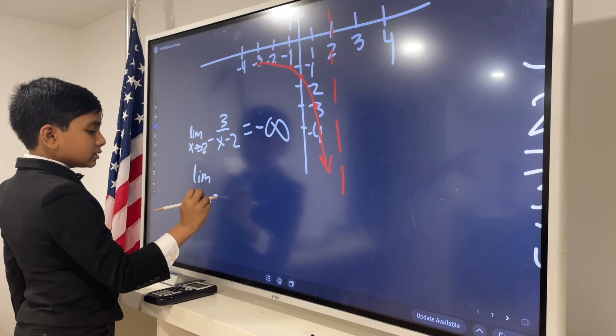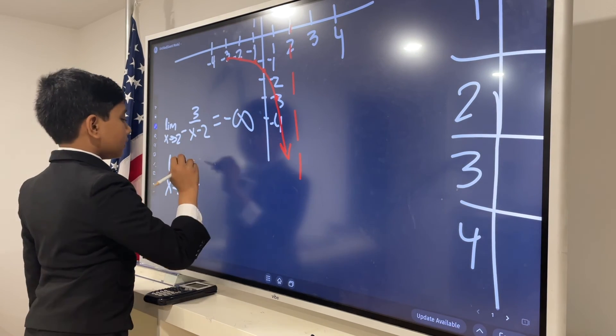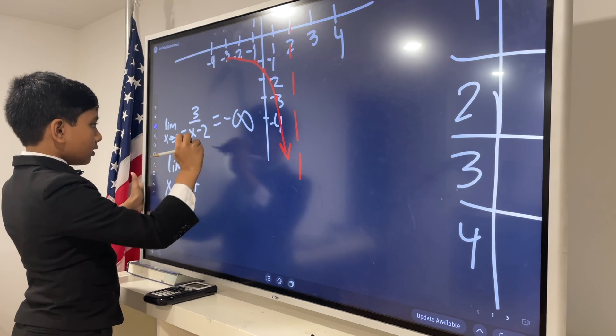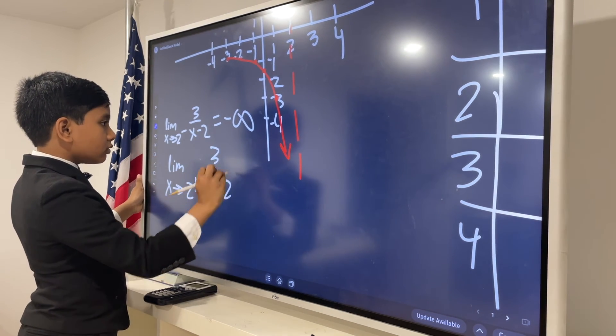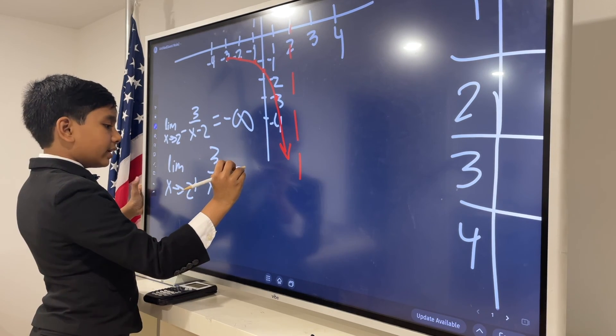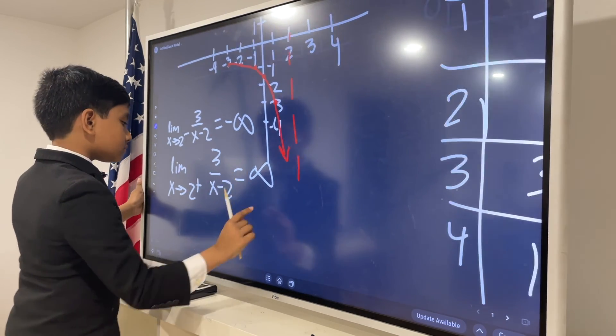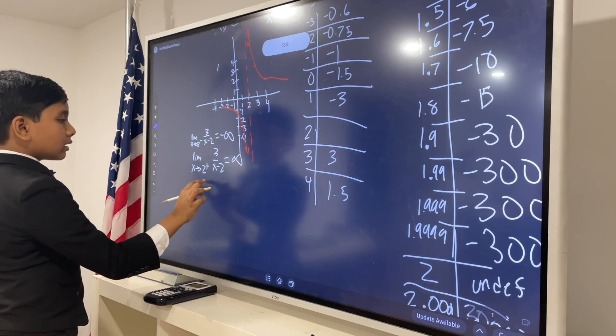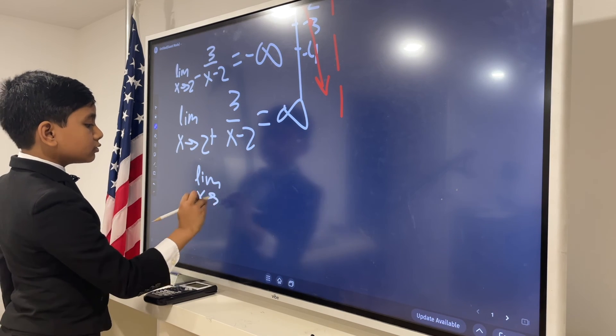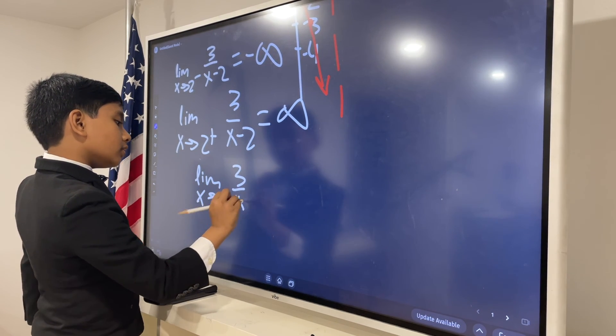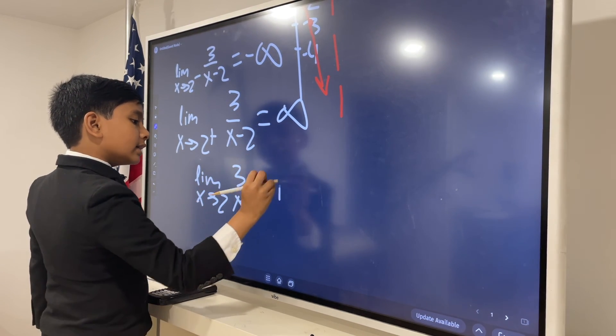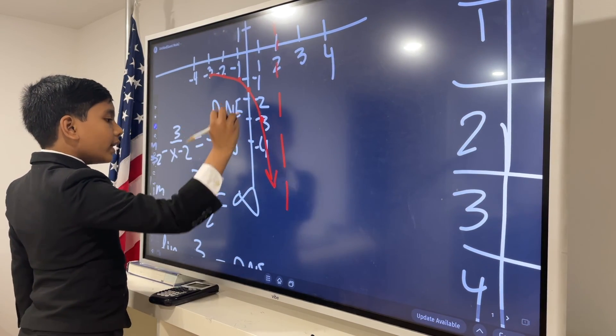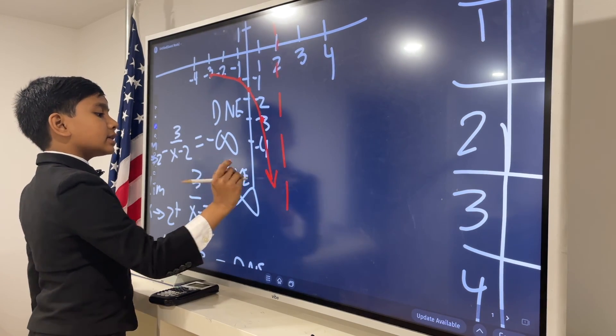Limit x approaches 2 positive, and then we have 3 over x minus 2 equal to positive infinity. So that did not just mean that the limit of x equal to 2 of 3 over x minus 2 does not exist. That also means that these one-sided limits do not exist either.